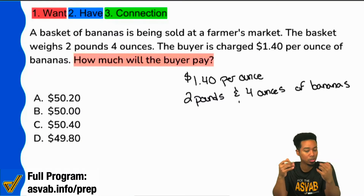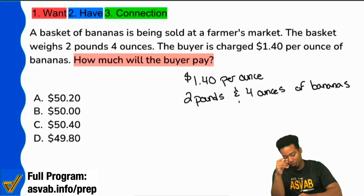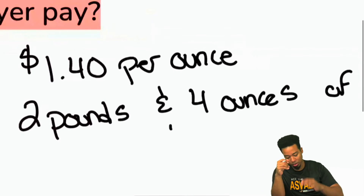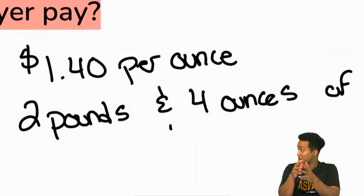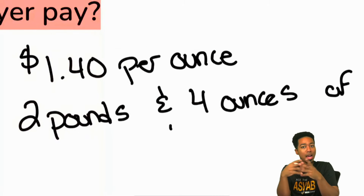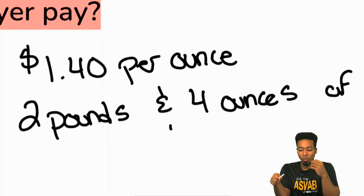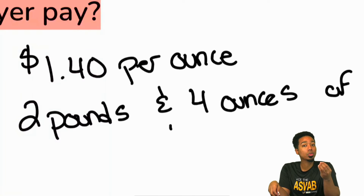Here is where we start getting technical. When we look at the one dollar and forty cents per ounce, what operation are we going to be doing with that one dollar and forty cents? What are we going to do with that?